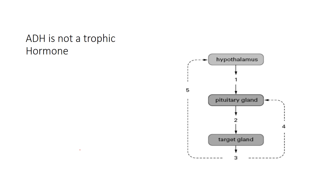ADH is not a tropic hormone. Most posterior pituitary hormones are not tropic. Tropic hormones are a hormone released by a gland that causes another gland to release another hormone. That definition is in topic three of your notes where it talks about tropic hormones. In the case of ADH, it is not tropic.